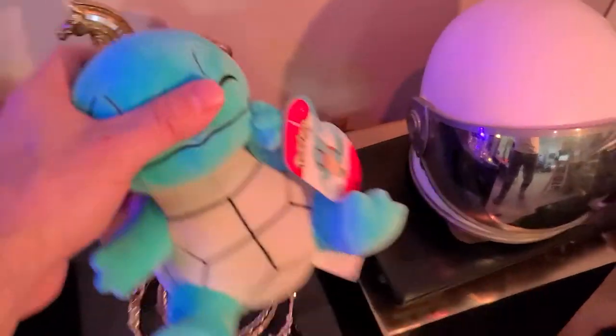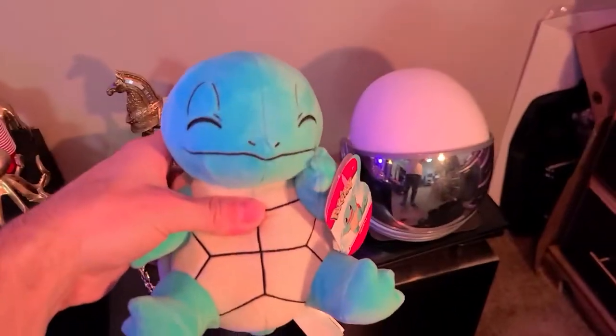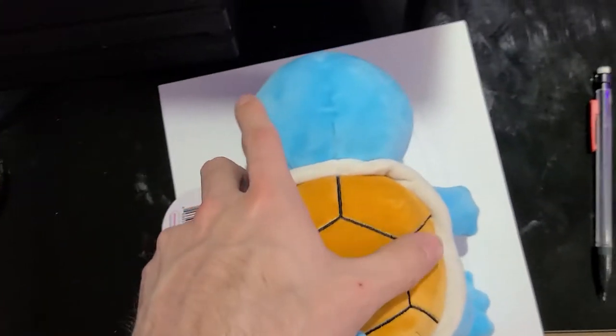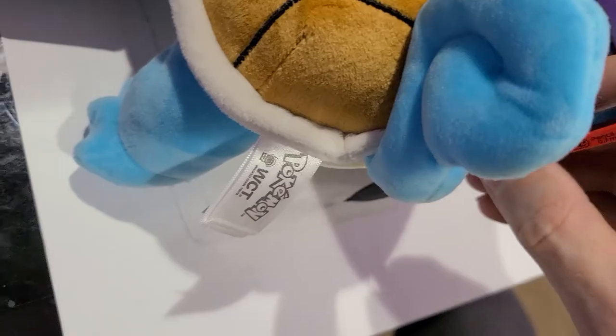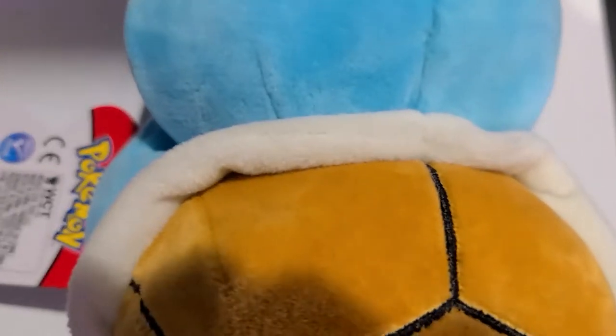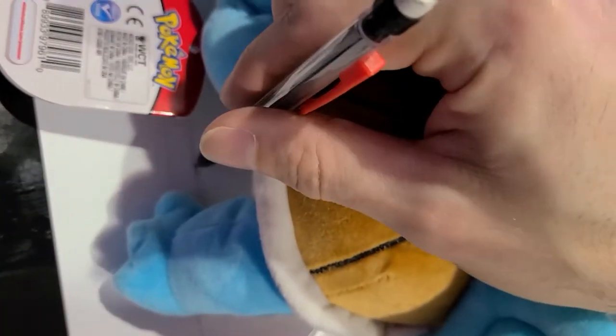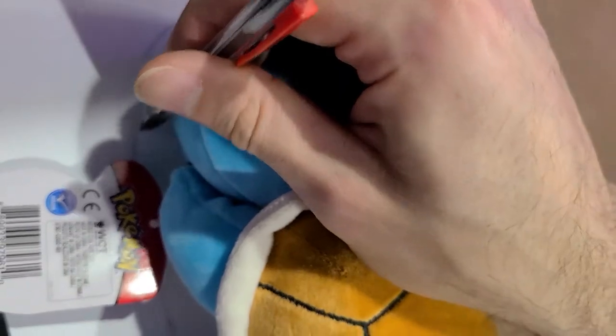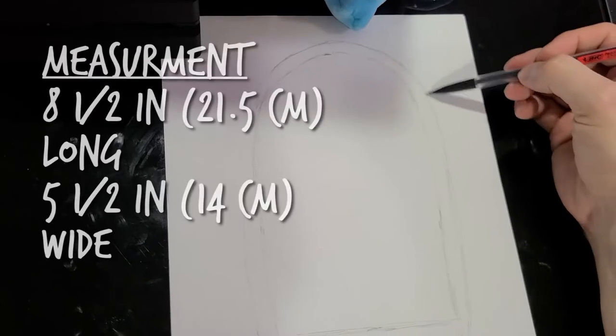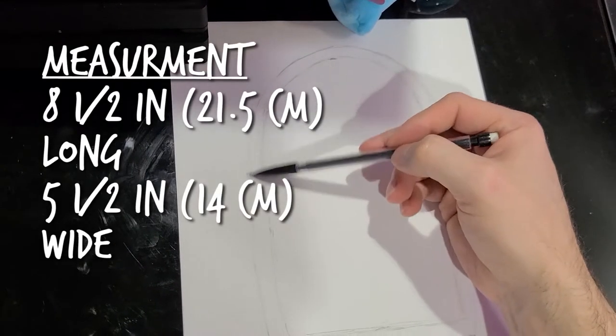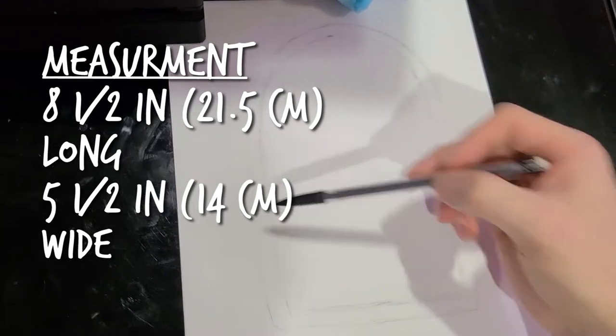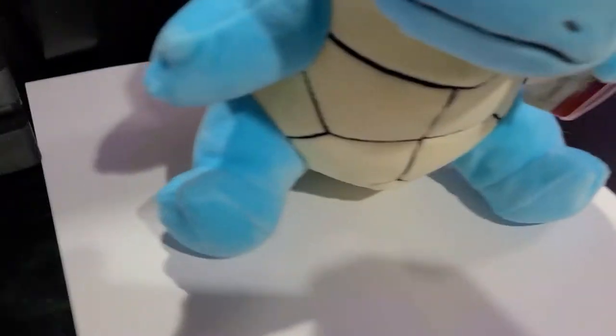First you're gonna want to grab your little Squirtle plushie that you have that's about the exact size of the Among Us crewmate you want to make. You're gonna trace him out a little bit like so, getting that outline in there, and then you're just gonna basically connect the dots. Giving yourself a little outside edge for your sewing area.